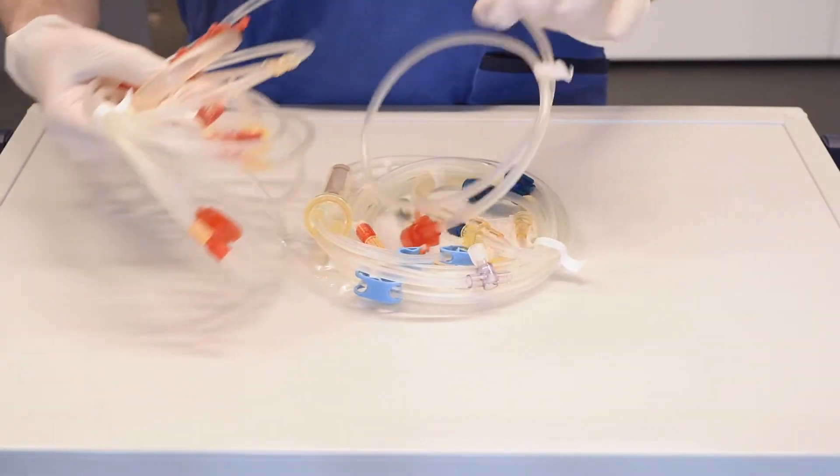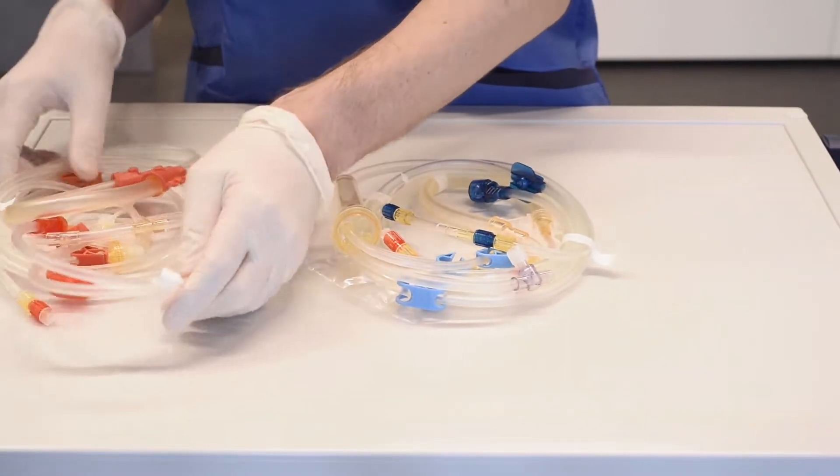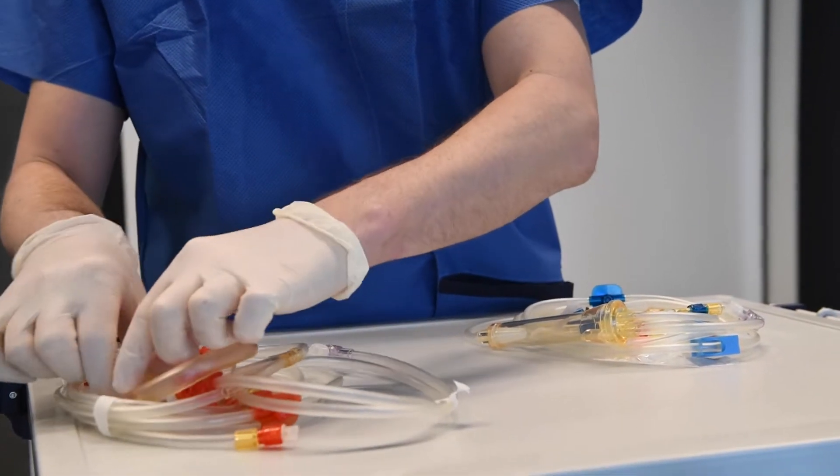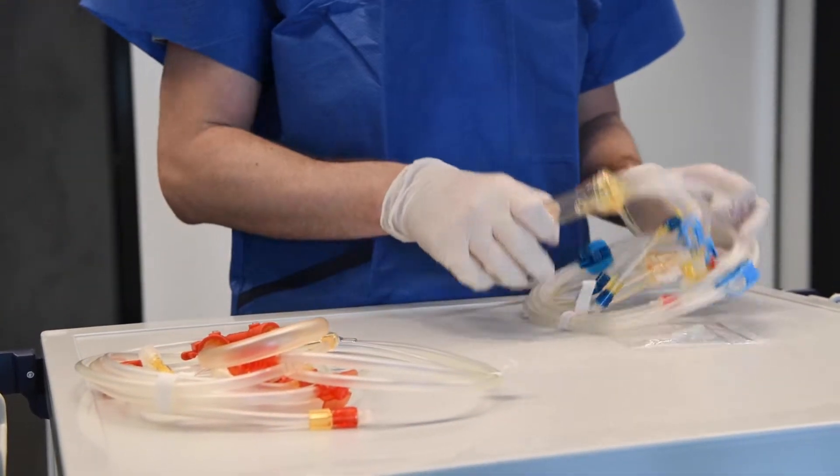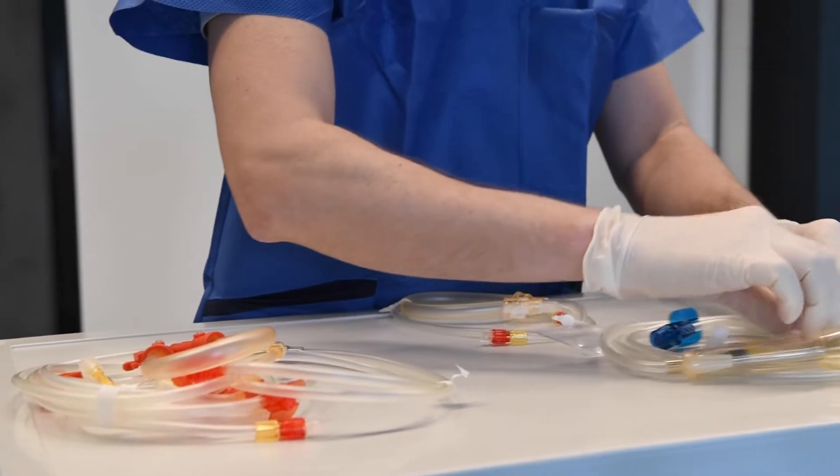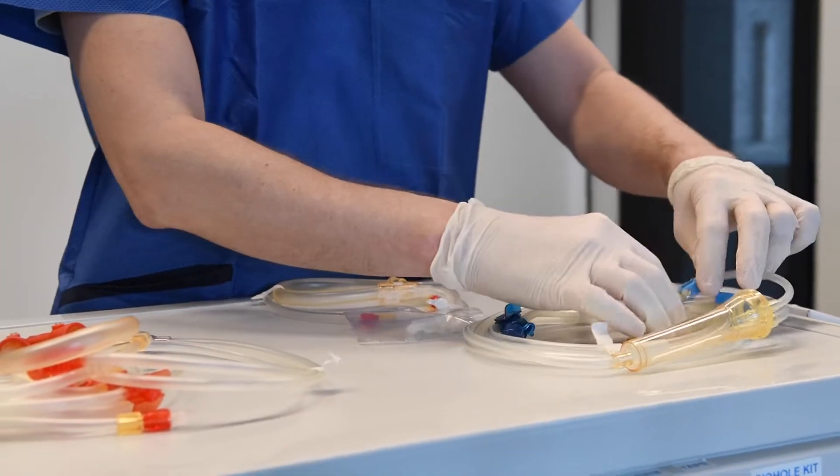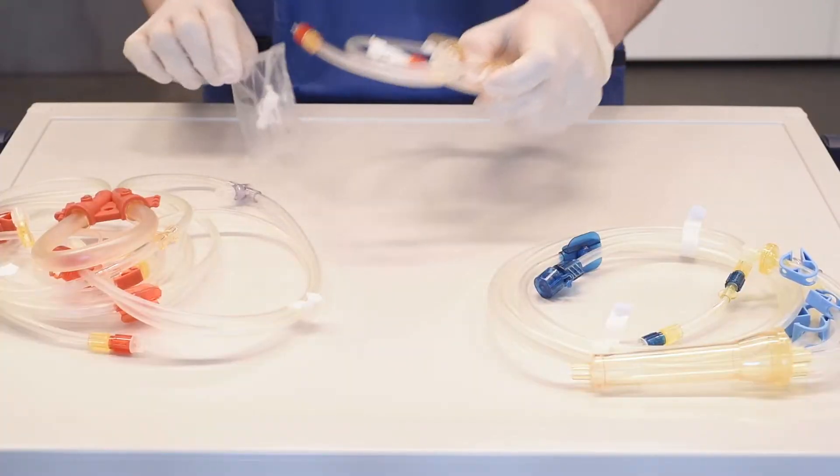The HDF bloodline consists of the arterial and venous lines, the substitution pump segment and a recirculator for reinfusion. Check the bloodline to make sure it is ready for use and the connectors and caps to make sure they are not loose.